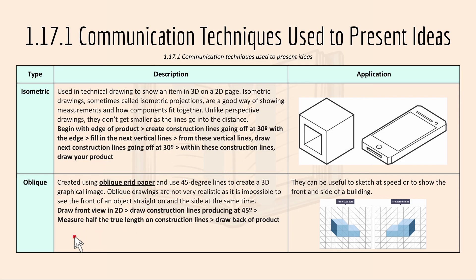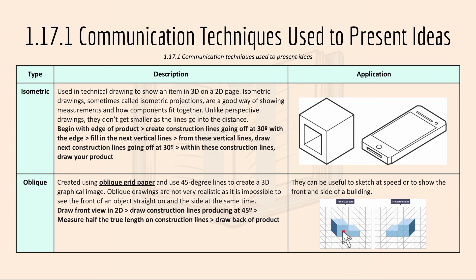And oblique drawing — it's created using oblique grid paper, using 45-degree lines to create a 3D graphical image. Oblique drawings are not very realistic as it is impossible to see the front of an object straight on and the side at the same time. Here's how you draw it: draw a front view in 2D, draw construction lines at 45 degrees, then measure half the true length of the construction line and draw back the product. Oblique drawings can be useful to sketch at speed or to show the front and side of a building or any design.